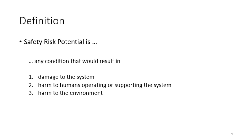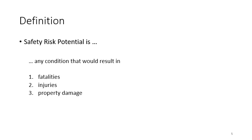Before we jump into the SSE role, a couple of definitions. Safety is the risk potential that any condition would result in damage to the system, harm to humans operating or supporting the system, and harm to the environment — that's the definition in the System Engineering Handbook. An alternate way of thinking about it: safety risk potential is any condition that would result in fatalities, injuries, and property damage, and you want to worry about those things in that order.